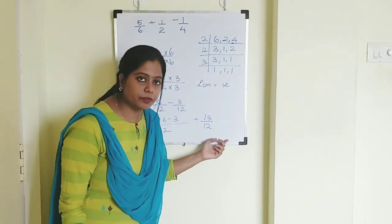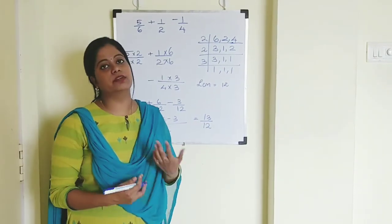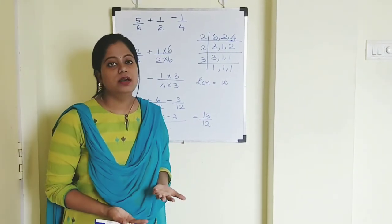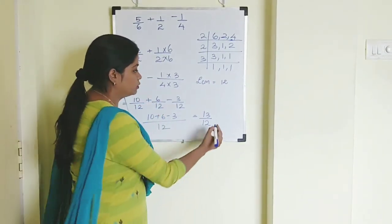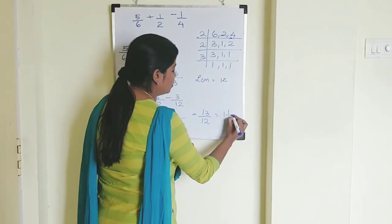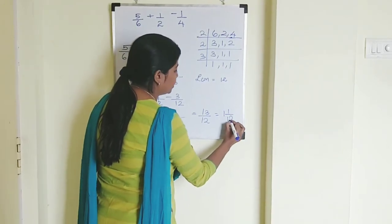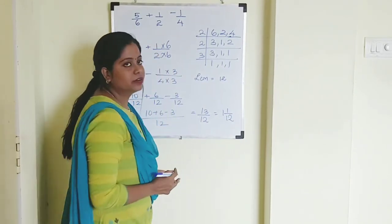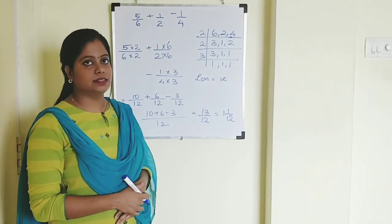Since 13 by 12 is an improper fraction, we convert it into a mixed fraction. The final answer is 1 and 1 by 12.